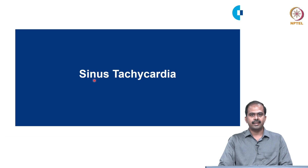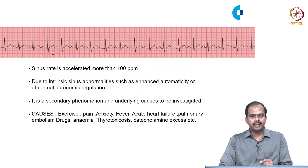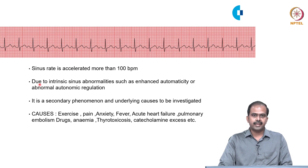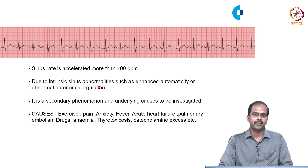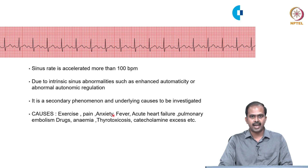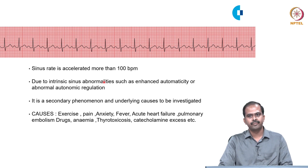When the sinus rate is accelerated to more than 100 beats per minute, it is called sinus tachycardia. It may be due to intrinsic sinus node abnormalities such as enhanced automaticity, or abnormal autonomic regulation such as enhanced sympathetic tone or depressed parasympathetic tone. Acute causes include exercise, pain, anxiety, fever, acute heart failure, and pulmonary embolism. Chronic causes include anemia, thyrotoxicosis, and catecholamine excess.